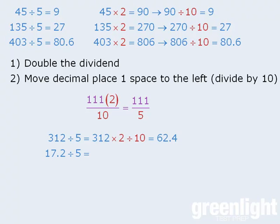What about 17.2 divided by 5? Well, first we'll take 17.2 and double it to get 34.4, then we divide 34.4 by 10 to get 3.44.